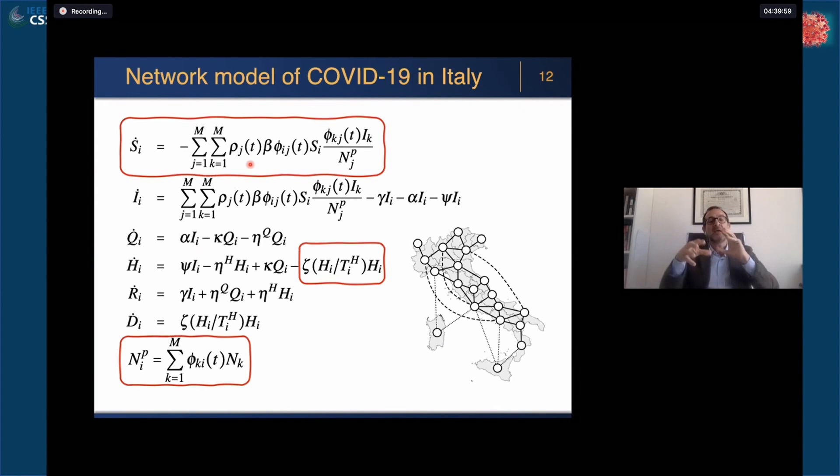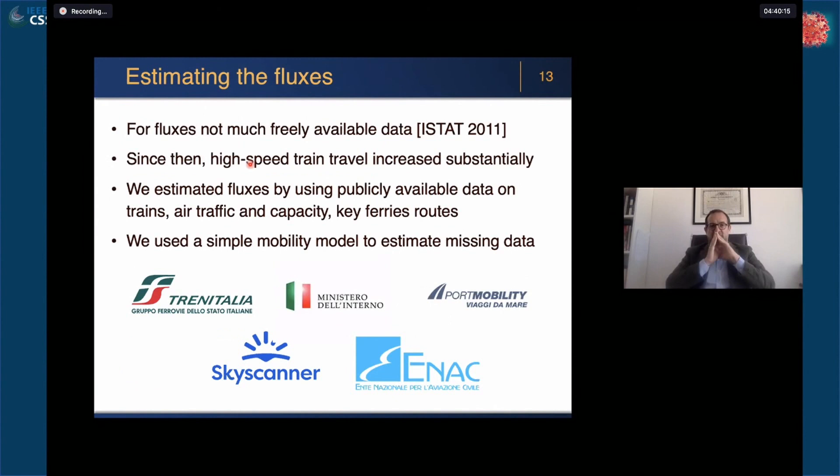Finally, you see the normalization N_iP, which depends on the flows of people coming in and coming out. So it's the present population in region i.